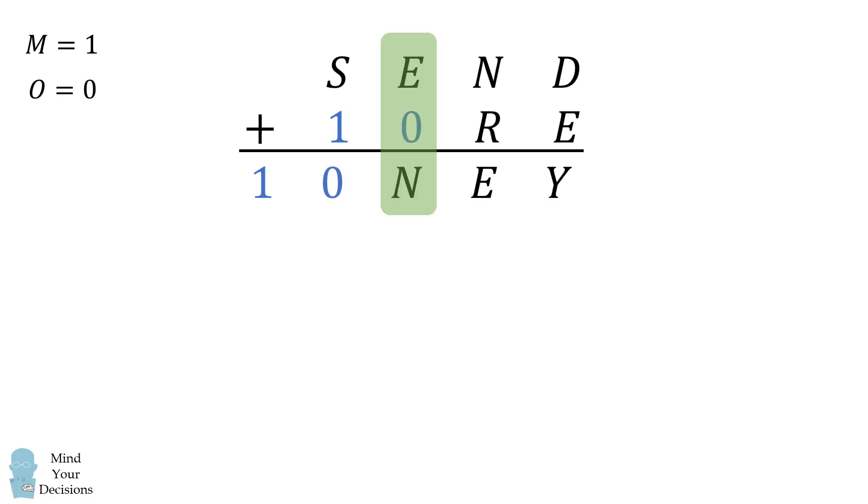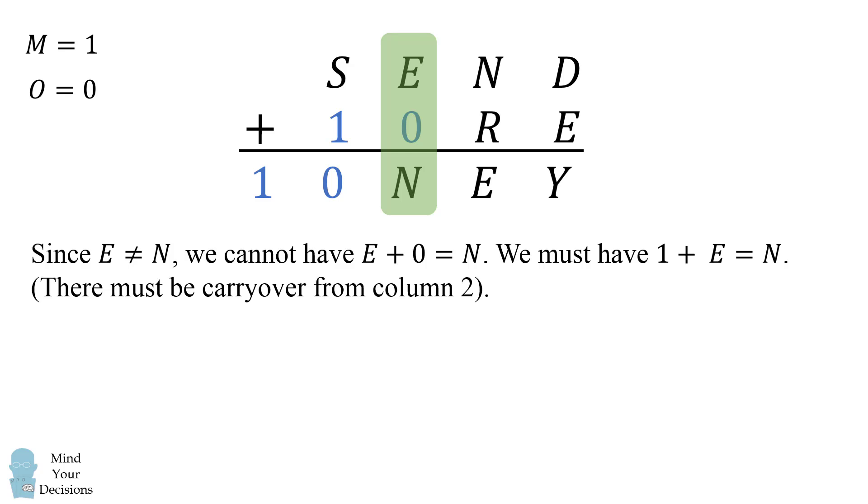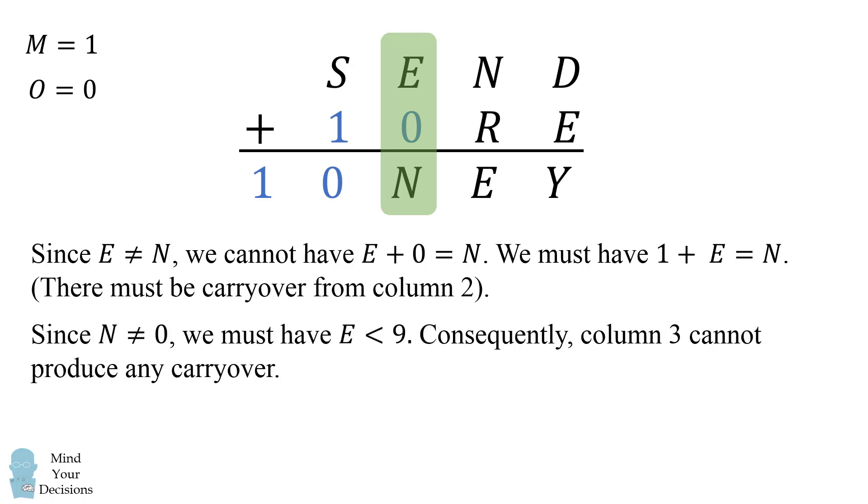Now we'll look at the third column. Since E cannot be equal to N because each of the letters is a distinct digit, we cannot have E plus 0 is equal to N. We must have 1 plus E is equal to N. In other words, there must be carryover from column 2. Now since N cannot be equal to 0, we must have E is less than 9. Consequently, column 3 cannot produce any carryover to column 4.